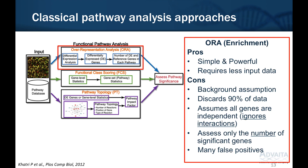The first and most common approach is what's called over-representation analysis, most commonly referred to as enrichment analysis. This is a very simple but powerful technique that leverages simple statistics to identify pathways that may be significant given your data. The other benefit to this particular approach is that it doesn't require very much input data — you can submit a short list of genes that you're interested in and you'll get a list of pathways that are enriched for that set of genes.